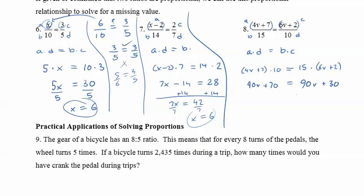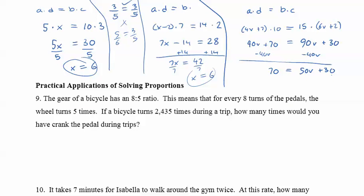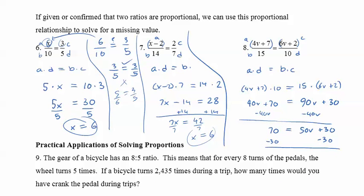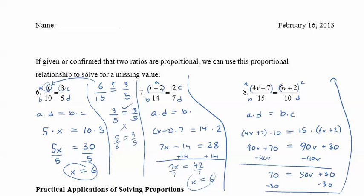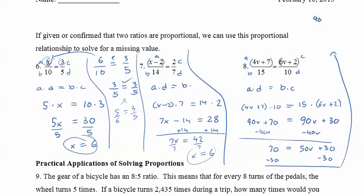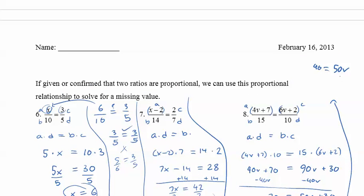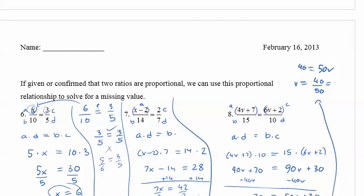So we want v on the same side. So subtract 40v from both sides. So subtract 40v. Subtract 40v. So 70 equals 90v minus 40v, which is 50v plus 30. Subtract 30 from both sides. We can get v by itself. This will get us, here let's move it up here. This will get us 70 minus 30, which is 40. See this one right here? 40 equals 50v. And now we can just divide by 50. v equals 40 over 50, which is then equal to 4 over 5.